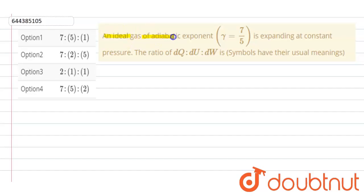Hello students, so the question is: an ideal gas of adiabatic exponent gamma equal to 7 upon 5 is expanding at constant pressure. The ratio dQ ratio dU ratio dW is, symbols have their usual meanings. So here we have to find first of all dQ.